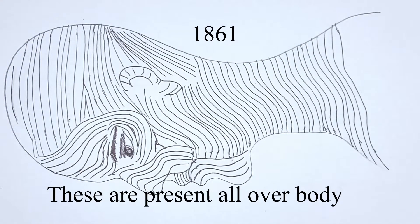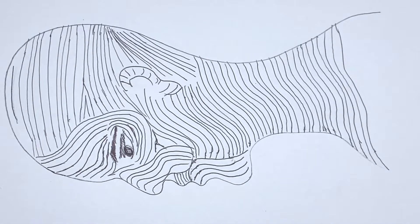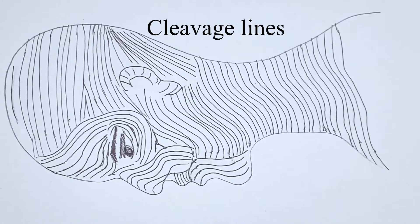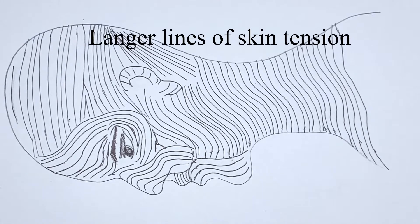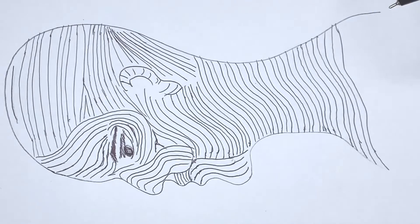These are also called cleavage lines, Langer's line of skin tension, or Langer's line itself. These are nothing but parallel to the natural orientation of the collagen fibers in the dermis as well as underlying muscle fibers.